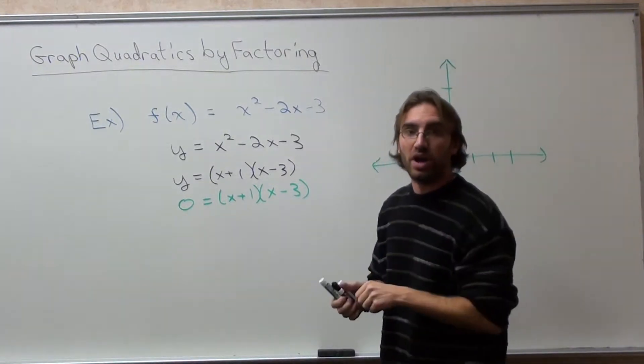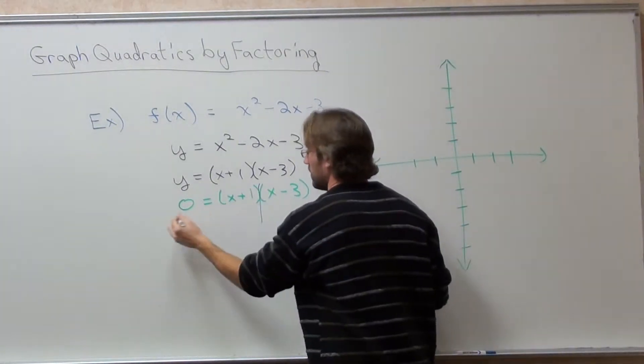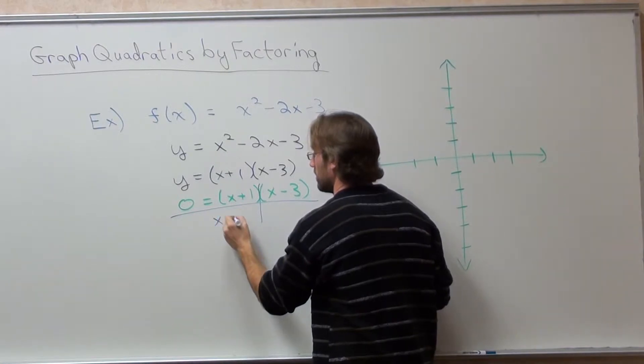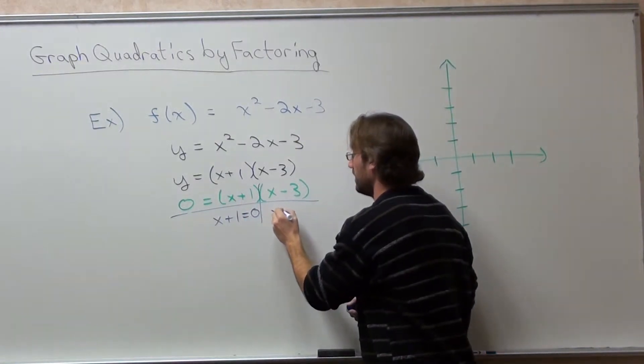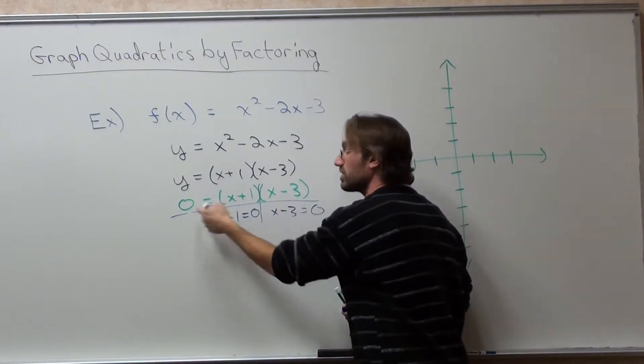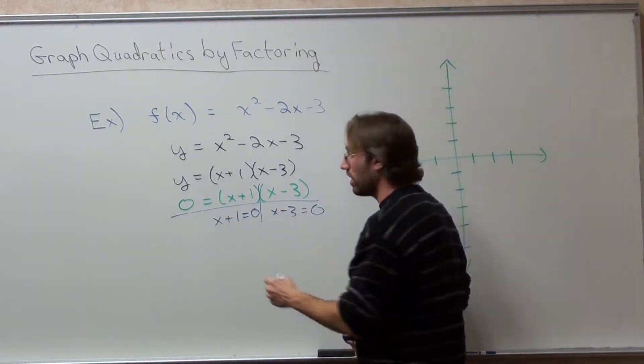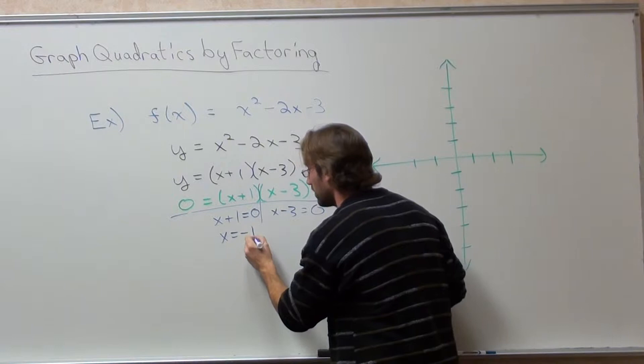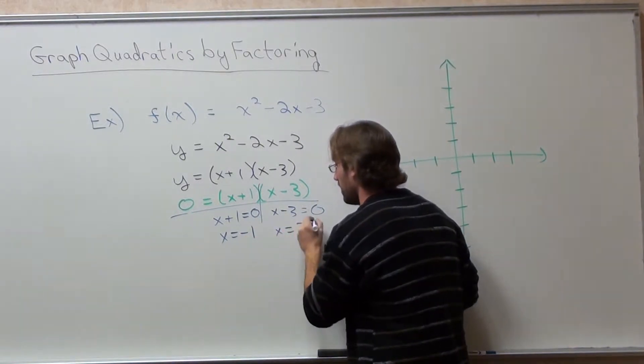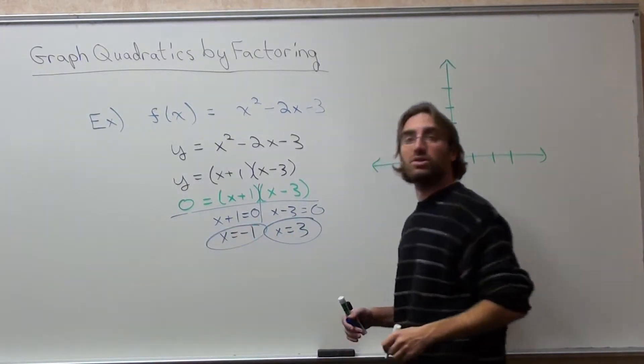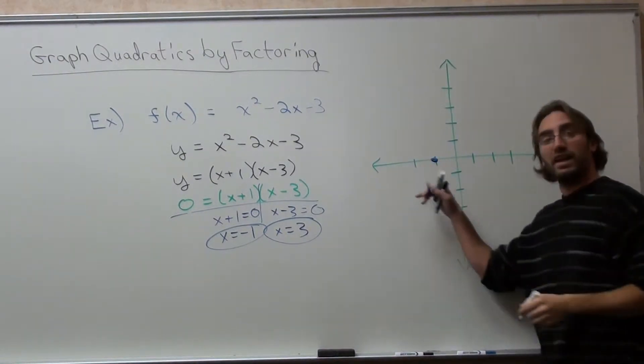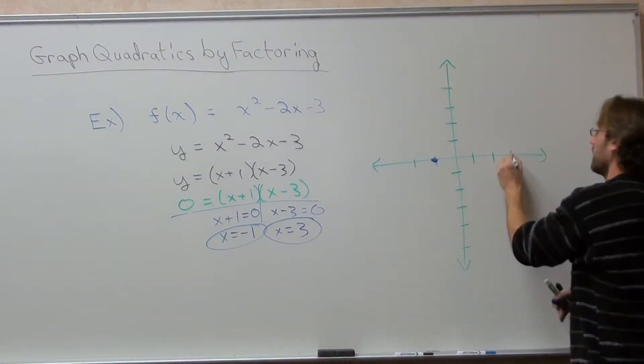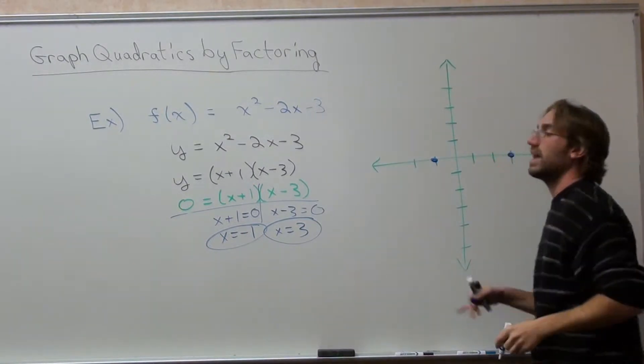So if I do that and use the zero product property, x plus 1 equals 0, and x subtract 3 equals 0. x equals negative 1, and x equals 3. So, it hits the x-axis at negative 1, and it hits the x-axis at 3.